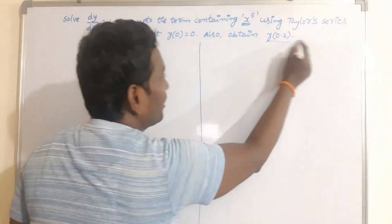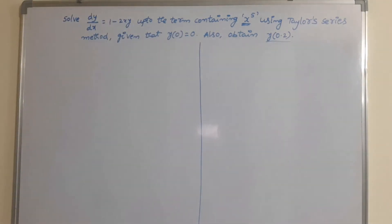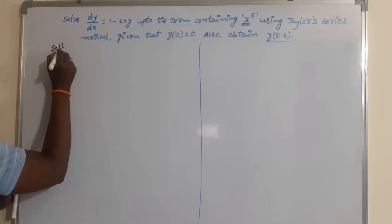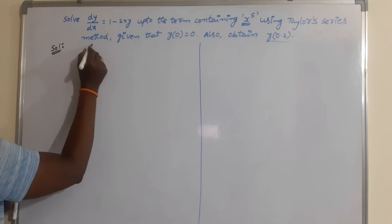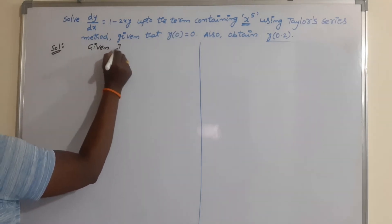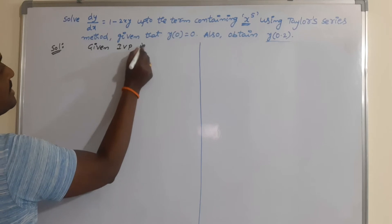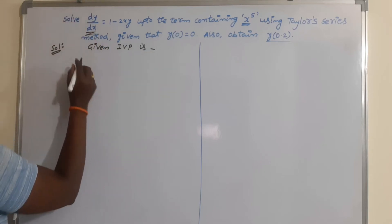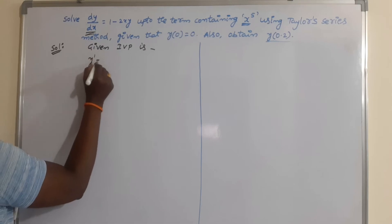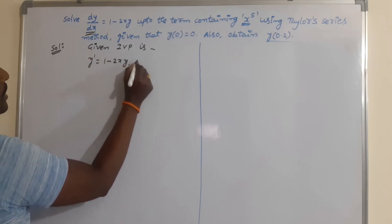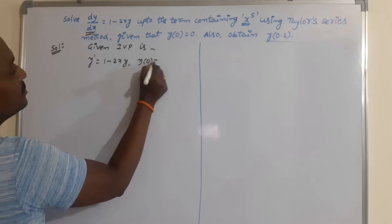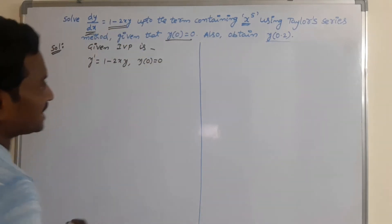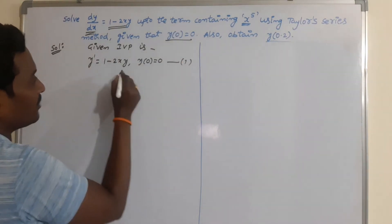After that, we have to find out y(0.2). First, write the given initial value problem. We can use the notation y' instead of dy/dx. So y' = 1 minus 2xy, with y(0) = 0. We have to find the solution at this initial condition. Take this as equation number 1.